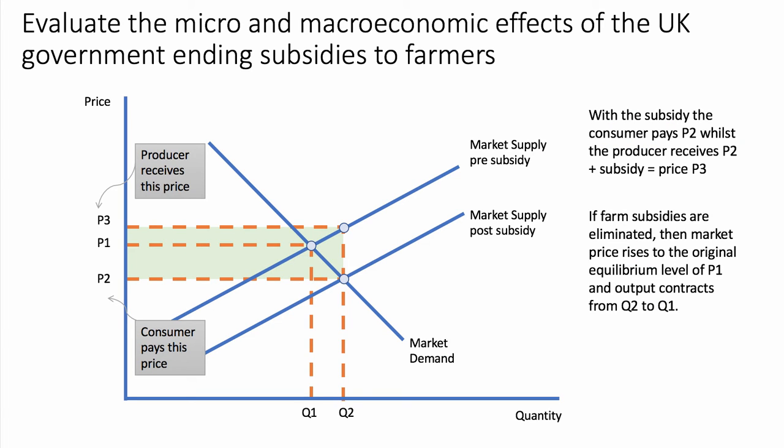For the analysis diagram, I considered cost and revenue curves but went with the supply and demand approach for this synoptic paper. Market supply before the subsidy is higher than market supply post-subsidy. When a subsidy is provided, supply shifts right; the consumer pays price P2, and the farmer gets P2 plus the subsidy payment, so they receive P3. Remove the subsidy and the market price reverts to the original equilibrium P1, with output contracting from Q2 to Q1.